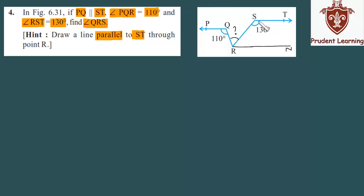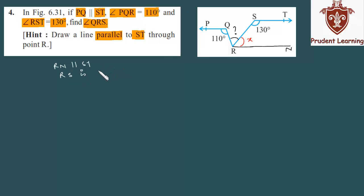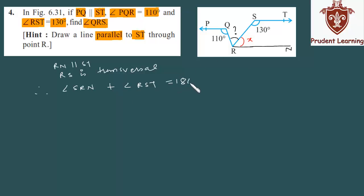Now, since RN is parallel to ST, SR is a transversal. Let us call angle SRN as X. Angle X and 130 degrees are lying on the same side of the transversal, so the sum of these two angles must be 180 degrees. So angle SRN plus angle RST equals 180 degrees.